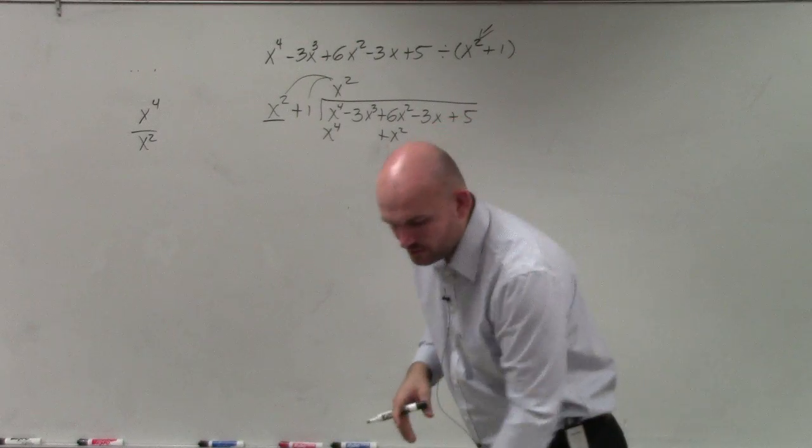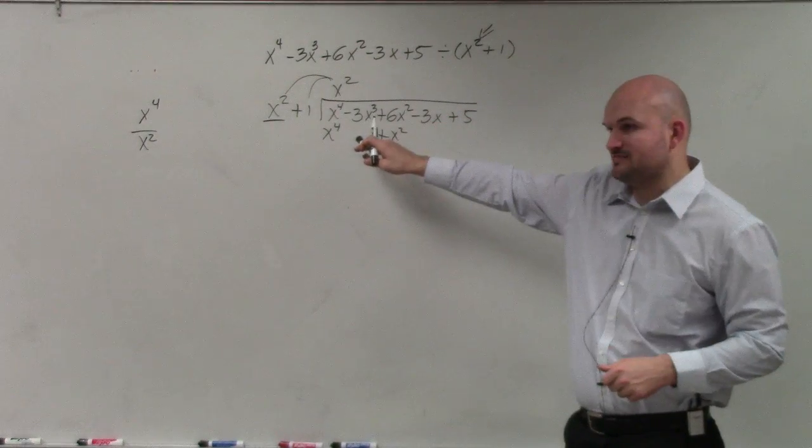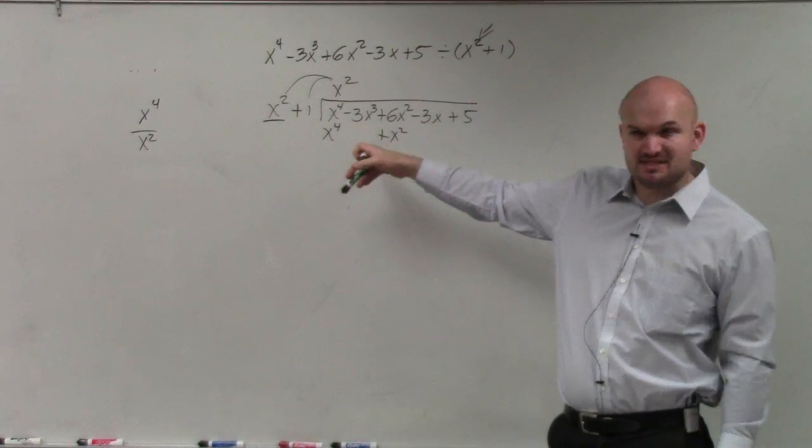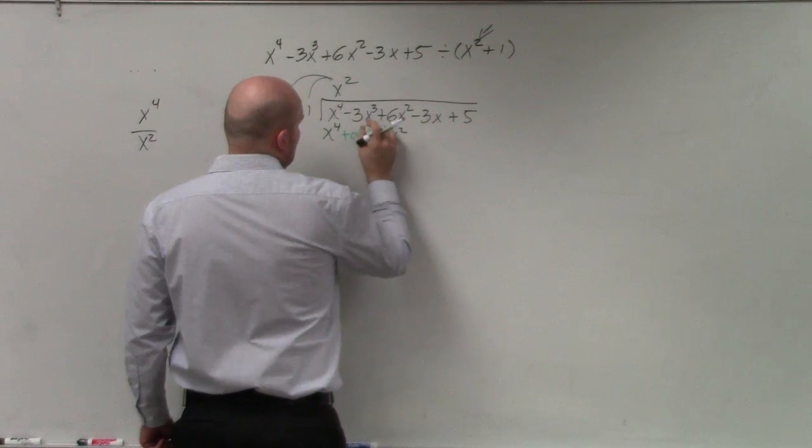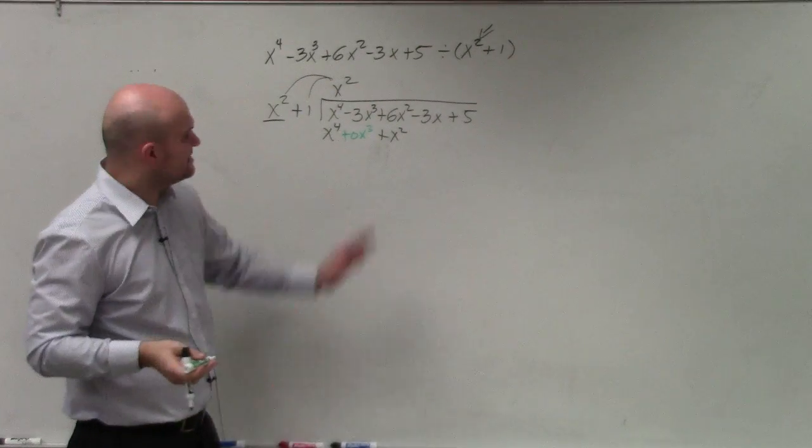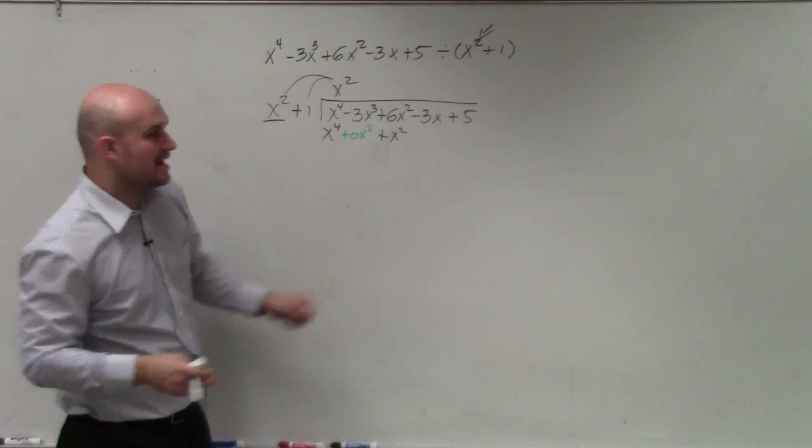What you can do if you don't like this space is you can put a space value there. You can put like a 0x cubed if you like. But what you'll notice is it doesn't really matter. It's just going to go all the way down.